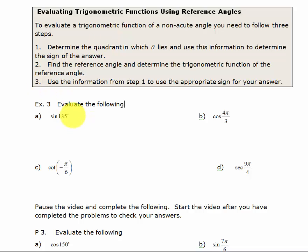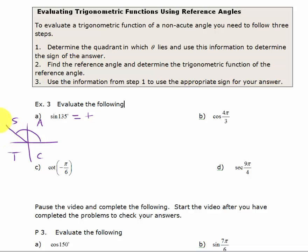This first problem is the sine of 135 degrees. When I draw 135 degrees, that brings me to the second quadrant. Now if I think of 'all students take calculus,' I know that in the second quadrant sine is positive. So I'm going to put in a positive, just to stress the fact that I know the sign of my answer is going to be positive. The reference angle is that acute angle that your terminal side makes with the x-axis. If this angle is 135, then the reference angle is going to be 45, because it's 180 minus 135.